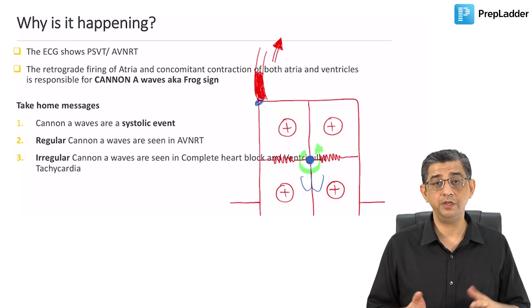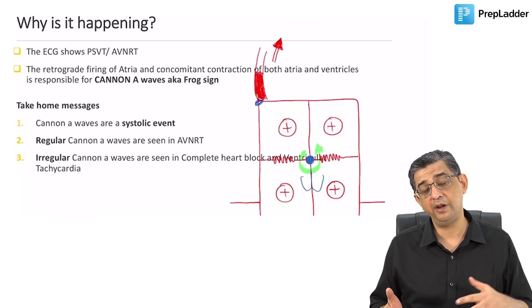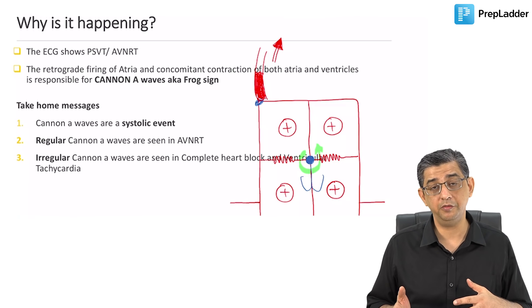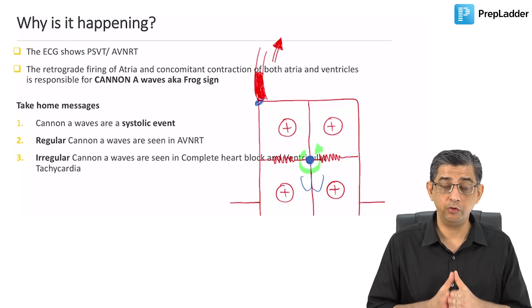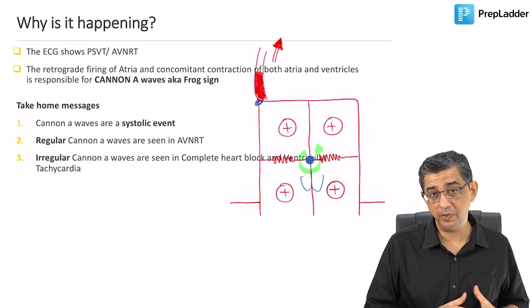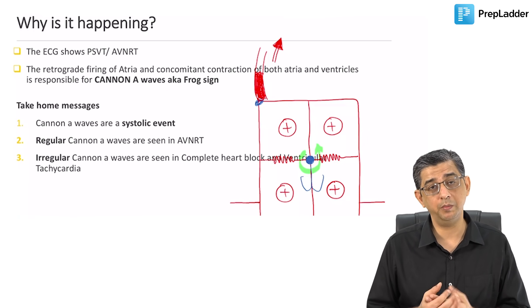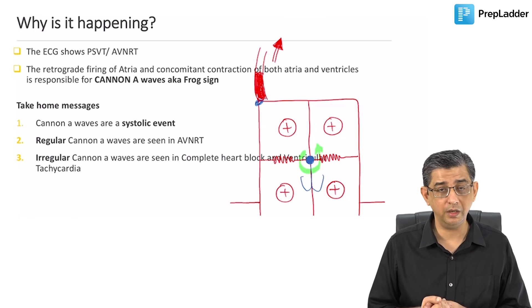When you have AV dissociation, the atria are firing at a different rate and the ventricles are firing at a different rate. This would be seen with a bradyarrhythmia such as complete heart block, and a tachyarrhythmia such as ventricular tachycardia.